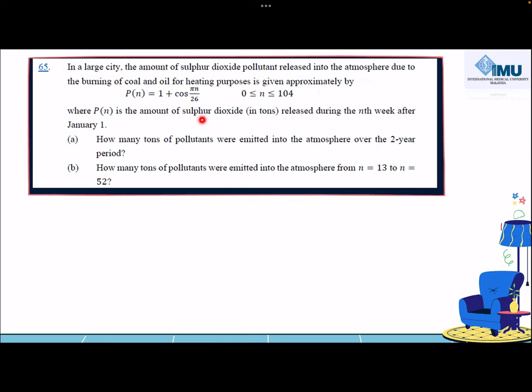P(n) is the amount of sulphur dioxide released during the nth week after January 1. So n is in the unit of weeks.